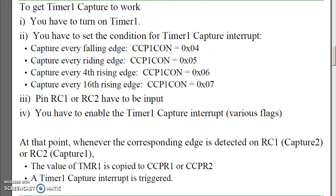To get Timer 1 Capture to work, I need to do a couple things. First, you have to turn on Timer 1. I have to set the conditions for the interrupt: do I want to interrupt on every falling edge, rising edge, fourth rising edge, or sixteenth rising edge? Make sure the corresponding pin on port C is set as input, and you have to enable Timer 1 Capture. At that point, you are interrupting on the edge seen on port C pin 2 or 1.